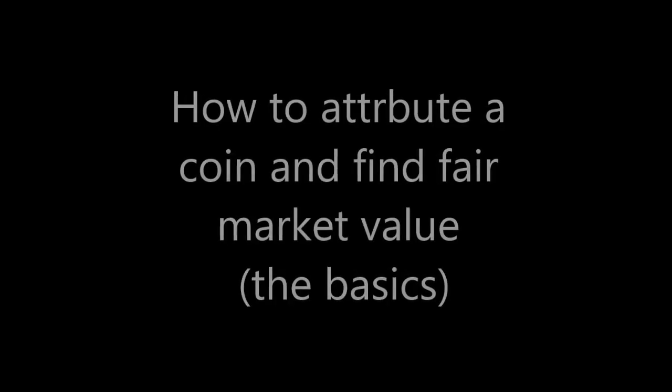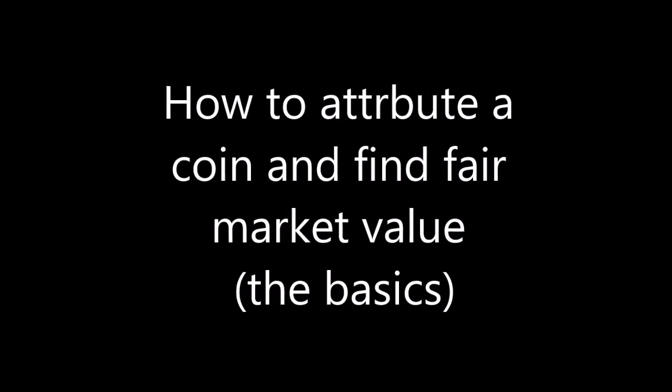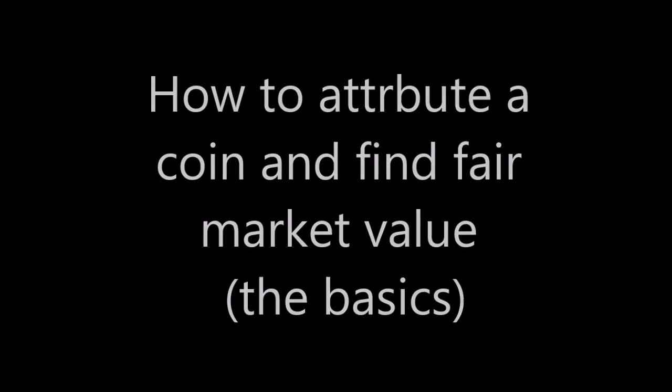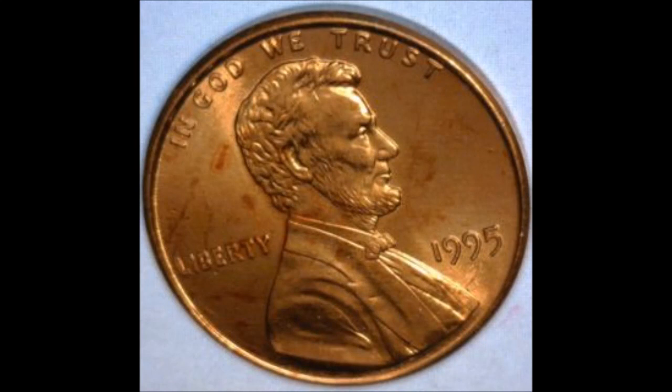While you are out coin searching, if you happen to stumble across something that you believe to be a double die, we're gonna use this 1995 as an example. So let's say you stumbled across this 1995 and you believe it to be a double die obverse. First of all, you need to figure out if what you're looking at really is a double die.